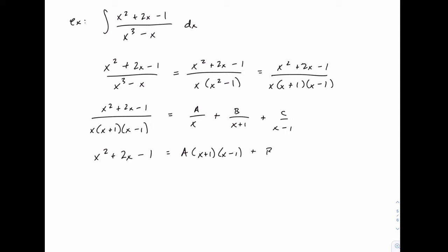On the second term, the x plus 1 cancels, so we have B times x times x minus 1. And on the third term, the x minus 1 cancels, so we have C times x times x plus 1.